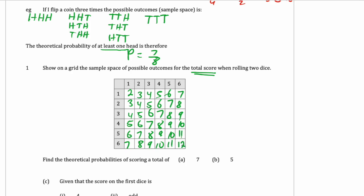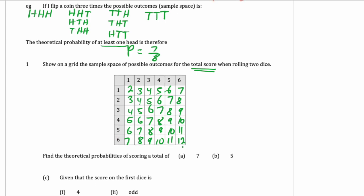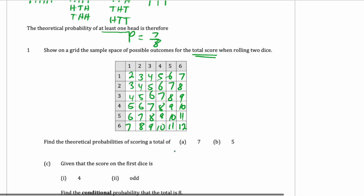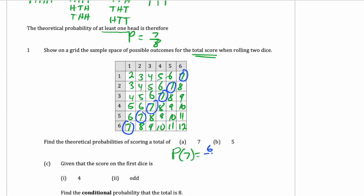There's only one way to get 12, and that's if you roll a double 6, so the probability is 1 out of 36 — very unlikely. The probability of getting a 7: from the sample space we can see there are 6 sevens, so it is 6 out of 36. The probability of getting a 5: we can count 1, 2, 3, 4 fives, so it's 4 out of 36.